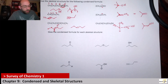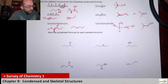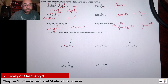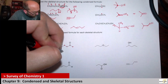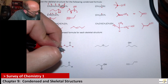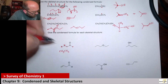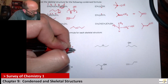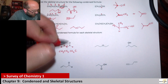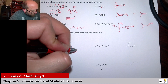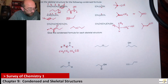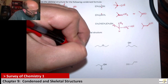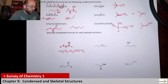Now going from skeletal to condensed, I'll work left to right. One, two, three, four, five carbons. Carbon one is CH3, carbon two is CH2, carbon three is also CH2. Carbon four has four bonds shown so it's just C by itself, with a double-bonded oxygen — I show the O — and then a CH3. That accommodates the C, the O, and the CH3.